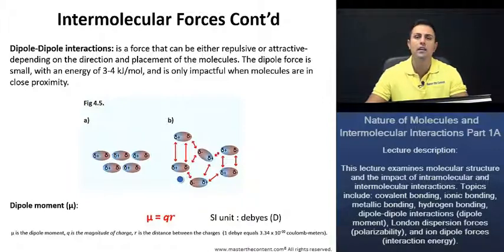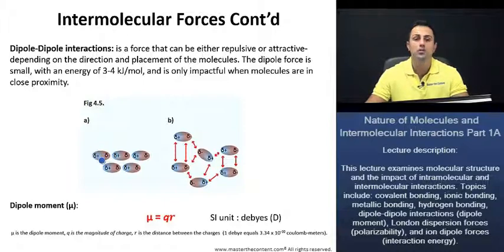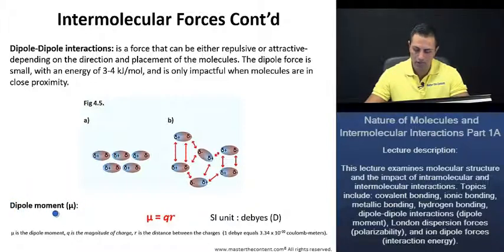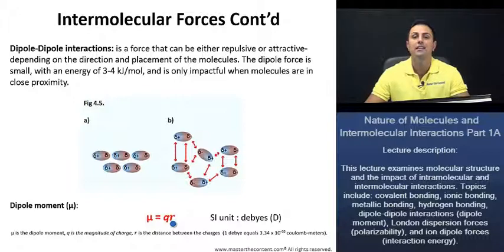Now, if we want to measure the strength of these dipole-dipole interactions, we can do so through what is known as the dipole moment. The dipole moment is the magnitude of the charge times the distance between the charges. The SI unit for the dipole moment is the Debye.